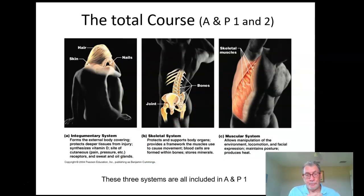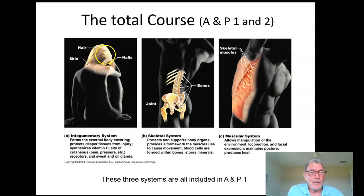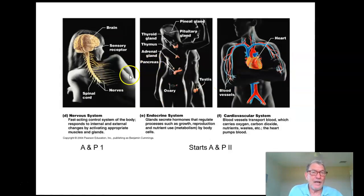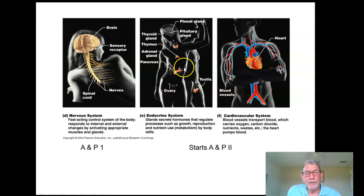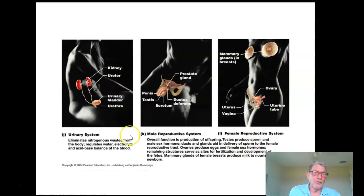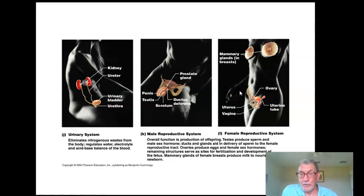ANP1 covers the basics of cells and tissue function, and the systems we'll cover are the integumentary system — which is the skin — bones, muscles, nerves, the skeletal system, the muscular system, and the nervous system. ANP2 covers everything else: the reproductive systems, the endocrine system, cardiovascular system, lymphatic, respiratory, digestive systems, the urinary system, and the kidneys and bladder. So ANP2 covers a lot of ground.